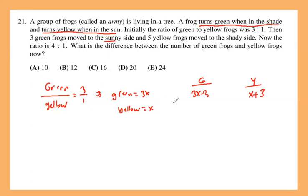And 5 yellow frogs, which was part of the x, move to the shady side, which means the yellow will decrease by 5 while the green will increase by 5.